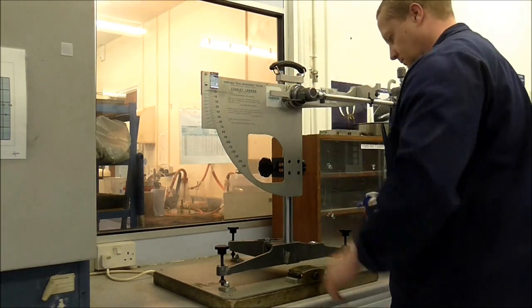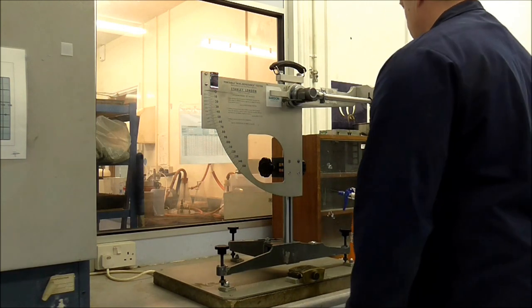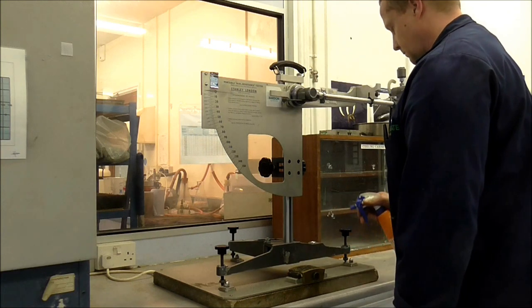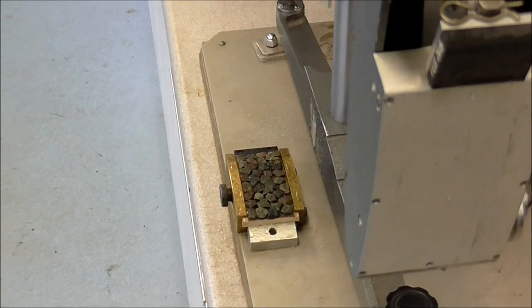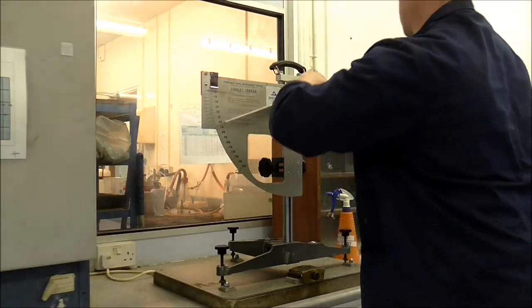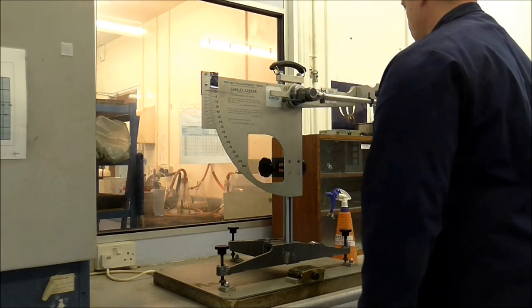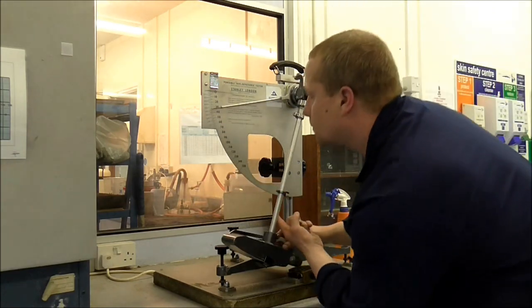For each aggregate type that is tested, two specimens are tested on day one of the test and the other two specimens are tested on day two. An overall mean is then calculated from the four specimens which must be corrected against the control stone before the PSV can be reported.